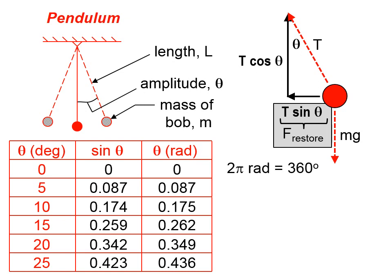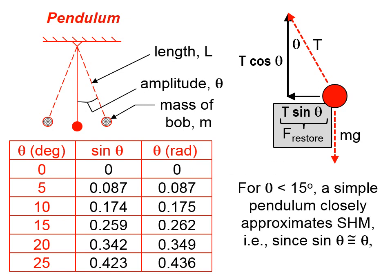For angles less than 15 degrees, a simple pendulum closely approximates simple harmonic motion, since the sine of theta is approximately equal to theta, which makes the restoring force approximately proportional to the angle.